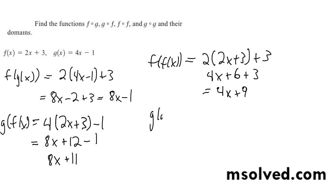And then g of g of x is going to give us 4 times 4x minus 1 minus 1, gives us 16x minus 4 minus 1, gives us 16x minus 5. And that's it.